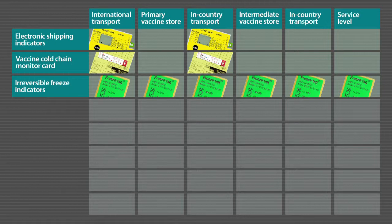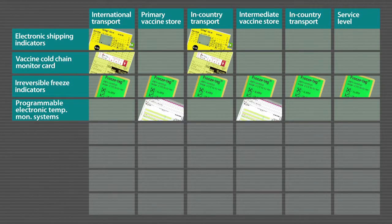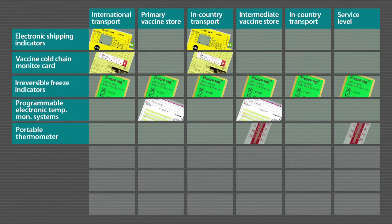Their use becomes more critical, especially at the country level, when you ship freeze-sensitive vaccines from one point to another. Programmable electronic temperature monitoring systems are recommended for use in storage facilities, such as primary vaccine stores or intermediate vaccine stores.